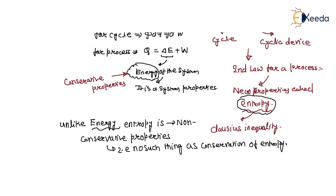When we define the second law for a process, we define entropy, and the defining of entropy is very abstract. The basis on which entropy is defined is the Clausius inequality. The main difference between energy and entropy is that both are system properties, but energy is a conservative phenomenon while entropy is a non-conservative phenomenon.